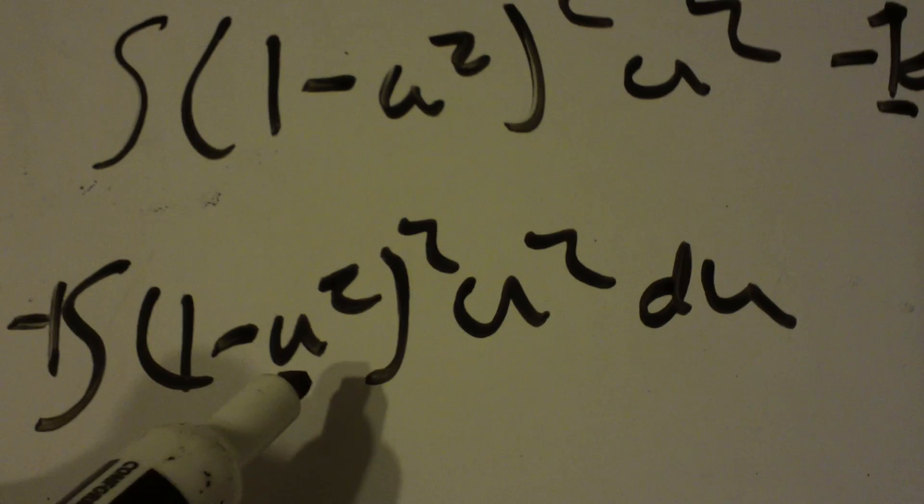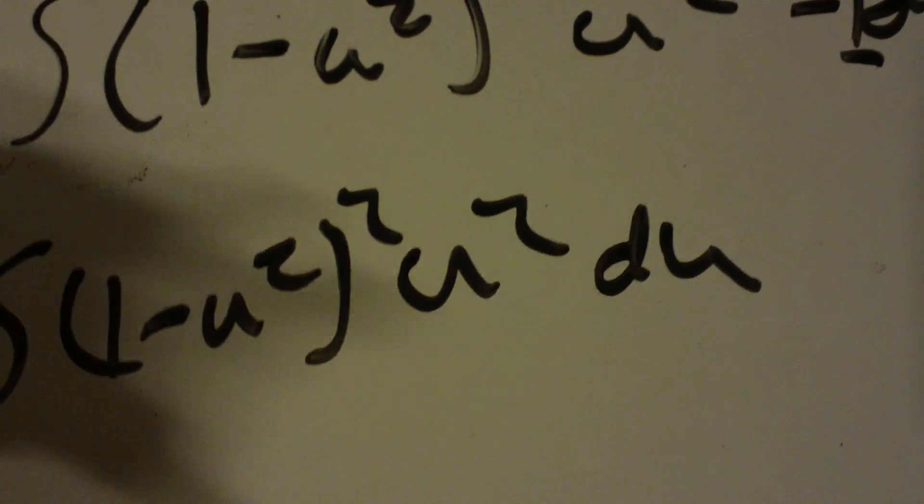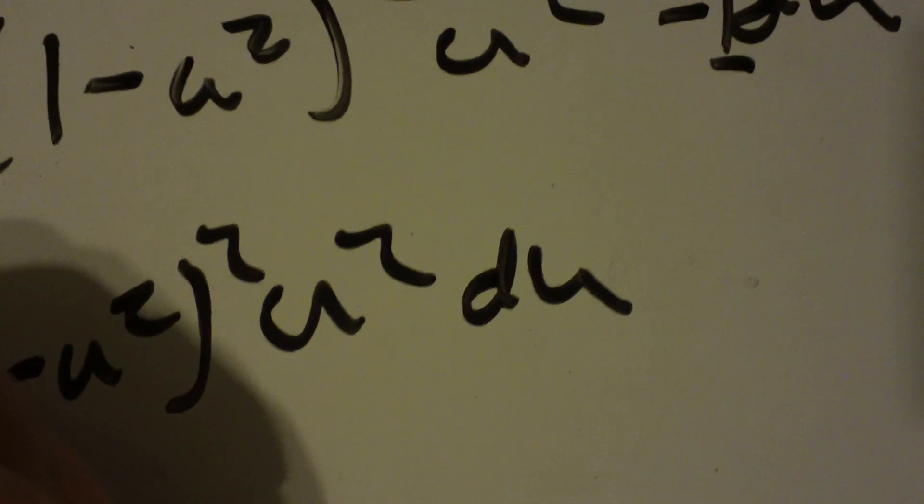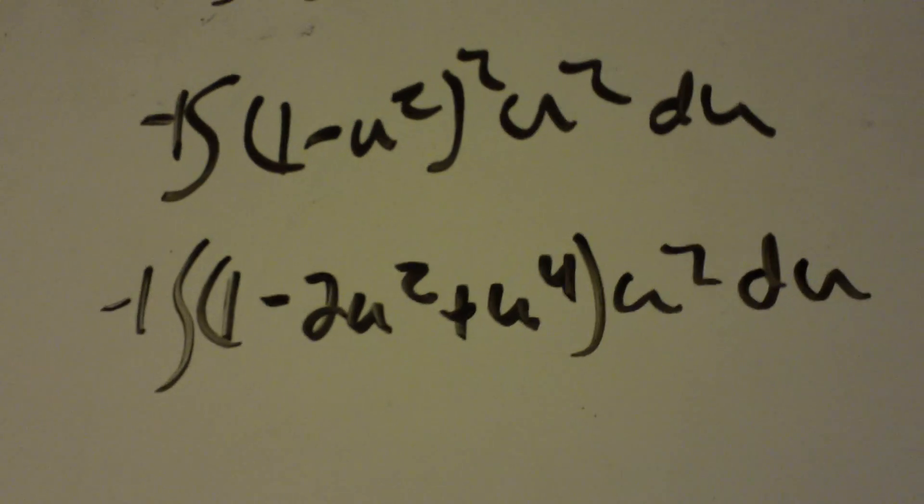Now this guy right here, you need to foil it, just like you would do any type of problem. So, 1 minus u squared squared is 1 minus 2u squared plus u to the 4th. That's all that is. And I still have my u squared du.